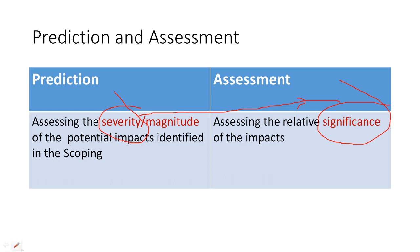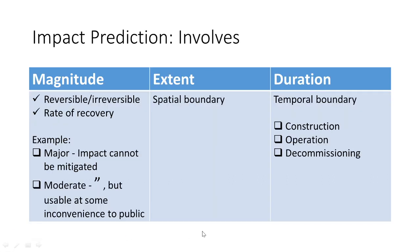Prediction involves a joint consideration of magnitude, extent, and duration. Magnitude involves considering whether the impact is reversible or irreversible. Take water pollution from a tannery into a river — if the impact is reversible, the magnitude is going to be lower. This is a subjective judgment, but when you measure it parameter by parameter it makes more sense. The second consideration is the rate of recovery — if the impact recovers quickly, the magnitude is less.